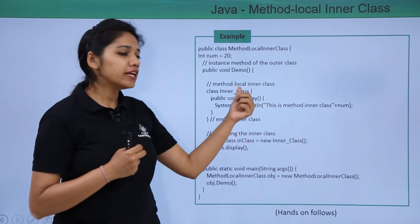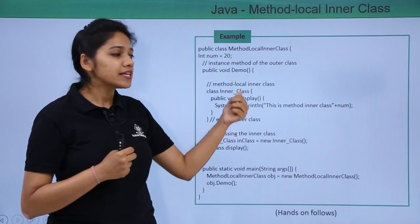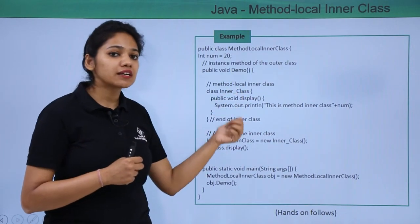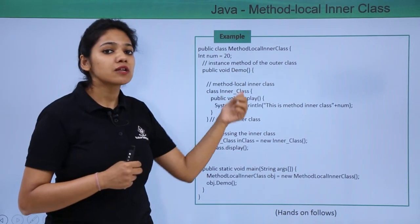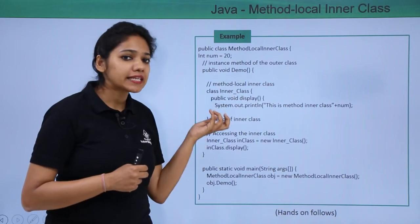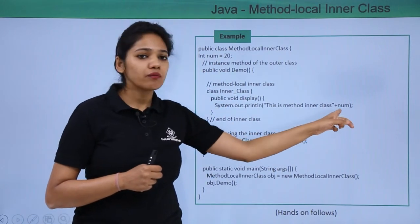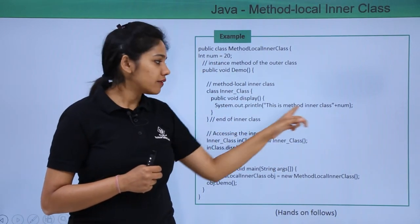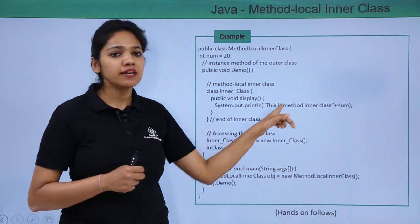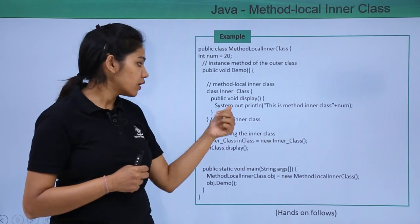This inner class is written inside the method, so it acts as local to that method and can still access the instance variable. This display method will show the value as output.